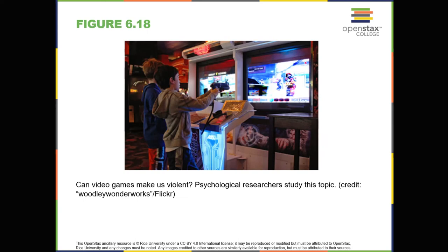Some studies suggest that violent television shows, movies, and video games may also have anti-social effects, although further research needs to be done to understand the correlational and causational aspects of media violence and behavior. Some studies have found a link between viewing violence and aggression seen in children. These findings may not be surprising given that a child graduating from high school has been exposed to around 200,000 violent acts including murder, robbery, torture, bombings, beatings, and rape through various forms of media. Not only might viewing media violence affect aggressive behavior by teaching people to act that way in real-life situations, but it has also been suggested that repeated exposure to violent acts also desensitizes people to it. Psychologists are working to understand this dynamic.